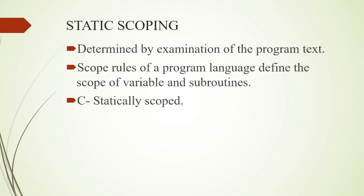Static scoping is determined by examination of the program text — that is, the sequence of statements in the program text determines the scope. Scope rules of a programming language define the scope of variables and subroutines. C programming language is statically scoped.